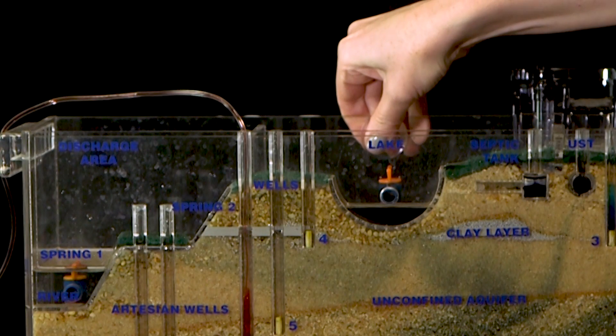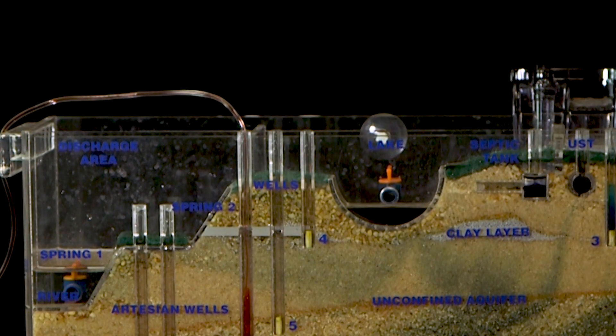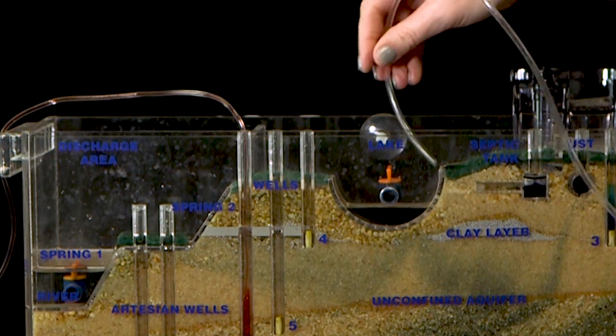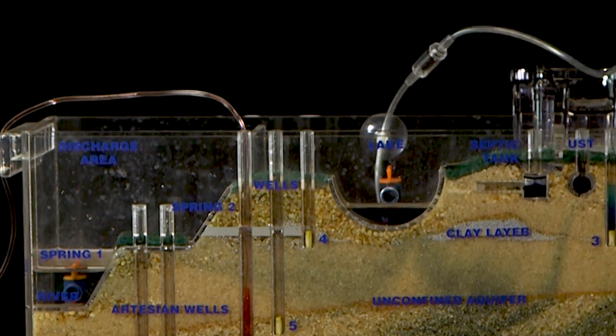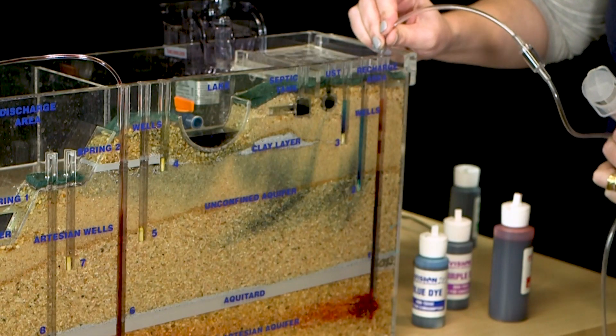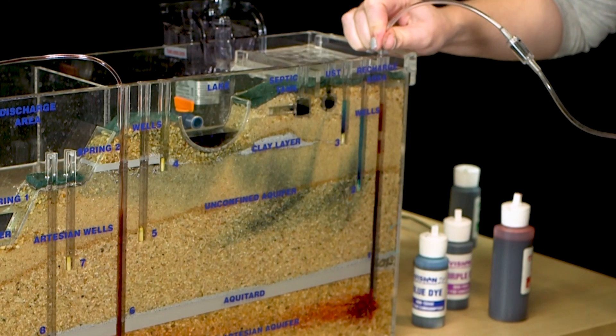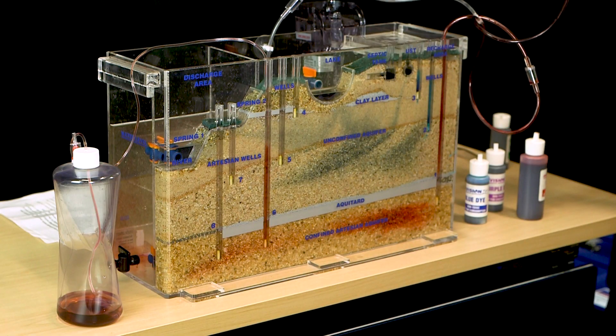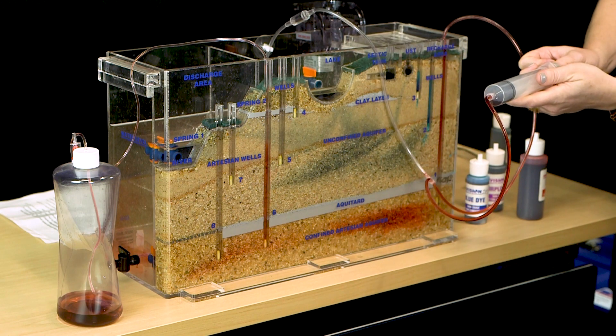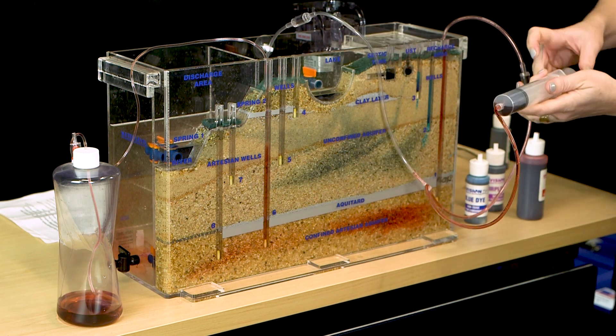Attach a suction cup from the parts bag to the back of the water reservoir. Clip the discharge tube into the suction cup so that it discharges into the reservoir. Then place the draw tube into a well and pull water into the syringe. Only draw about halfway up the syringe at once to avoid accidentally pulling the plunger out and spilling the dye.